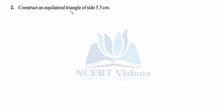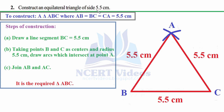Question 2: Construct an equilateral triangle of side 5.5 cm. It is very simple — we follow the same steps as the previous question. The aim is to construct triangle ABC where all three sides AB, BC, and CA equal 5.5 cm. Always try to follow alphabetical order when naming sides.